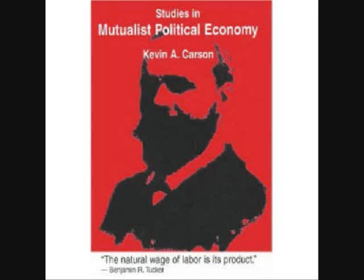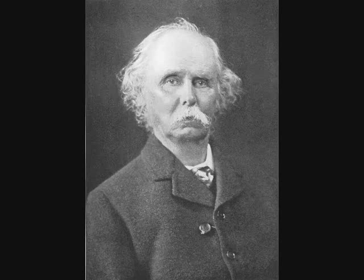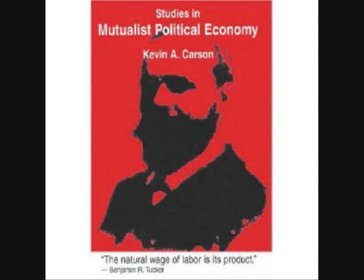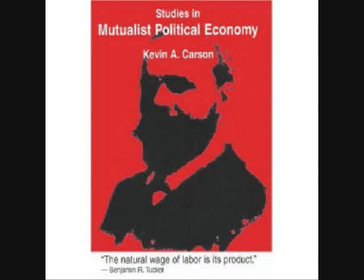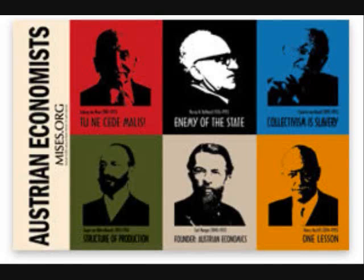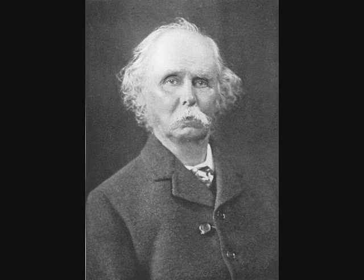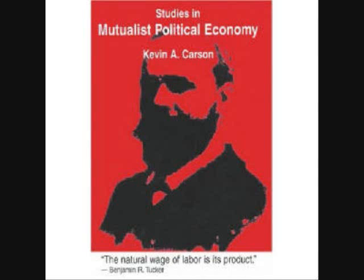So Rothbard's objection to the Marshallian scissors was Marshall's claim that equilibrium price, or the long run, could be reached in practice. Strangely enough, though, I can't recall ever seeing any such claim by Marshall. We should be careful, by the way, to distinguish the Austrian concepts of the final state and final equilibrium from that of the evenly rotating economy. Marshall's long run, although bearing some resemblance to the final equilibrium, differed fundamentally from the evenly rotating economy.